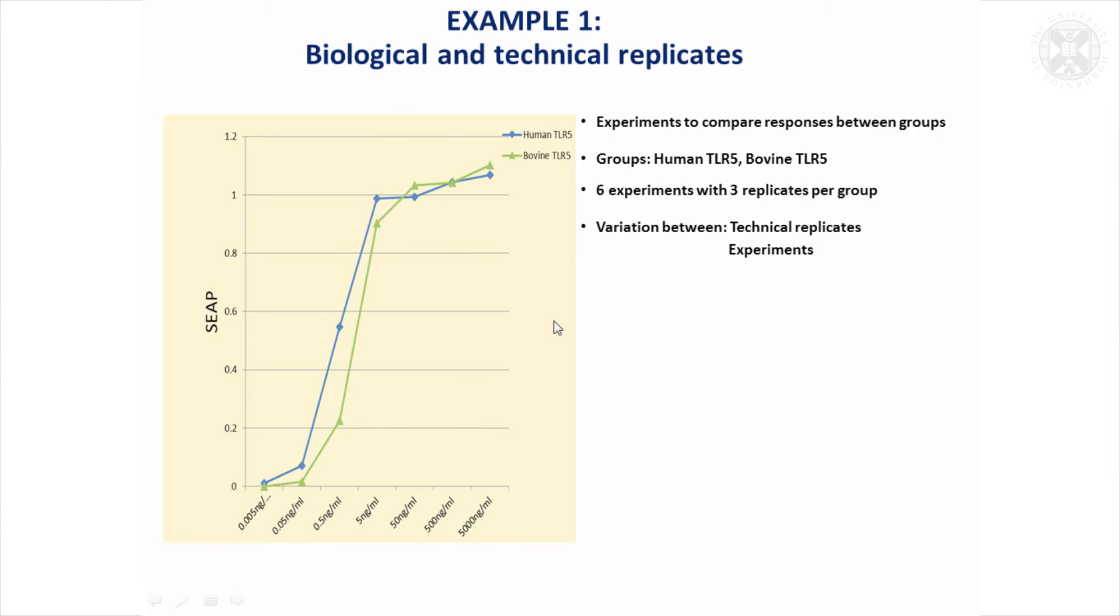So now I'll go on to look at a few examples which will hopefully bring them to life a bit. This is a situation people often come to me with. They've done an experiment or several experiments. This was described to me as six experiments. It turns out it's six biological replicates.